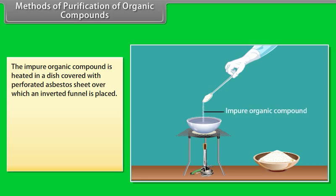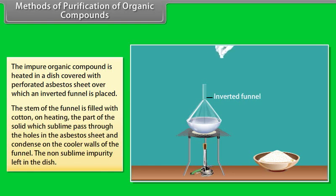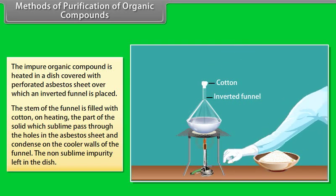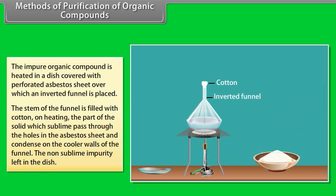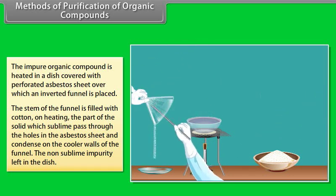The impure organic compound is heated in a dish covered with a perforated asbestos sheet, over which an inverted funnel is placed. The stem of the funnel is filled with cotton. On heating, the part of the solid which sublimes passes through the holes in the asbestos sheet and condenses on the cooler walls of the funnel.